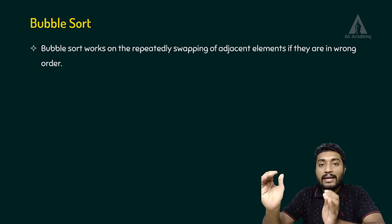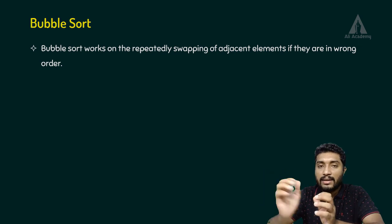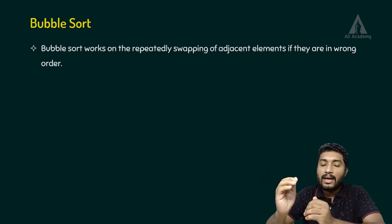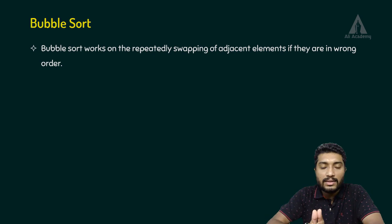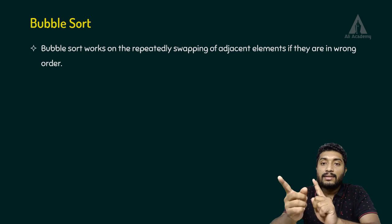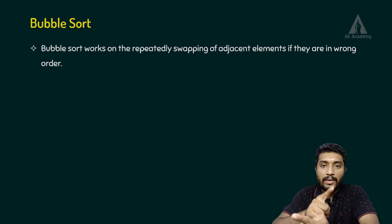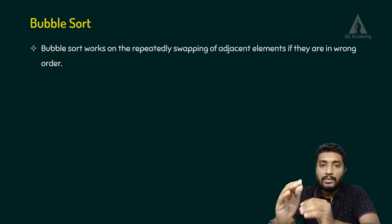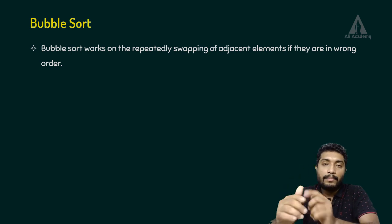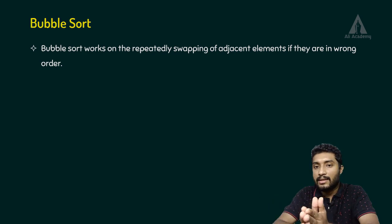So, if we have an array - a particular integer array - and we want to sort it in ascending order or descending order, we repeatedly swap adjacent elements to achieve that order. If the elements are in the wrong order, we swap them; otherwise, we leave that particular set of elements.